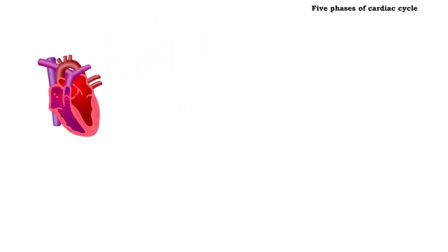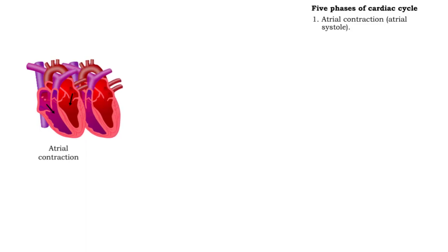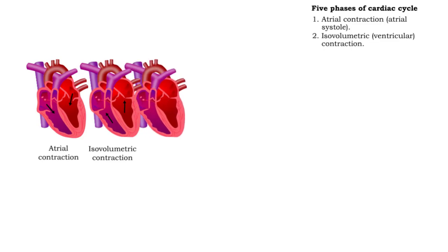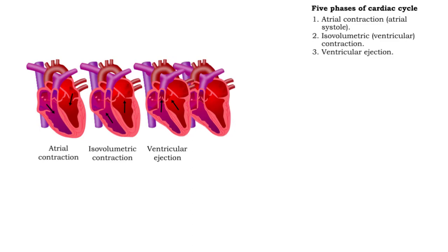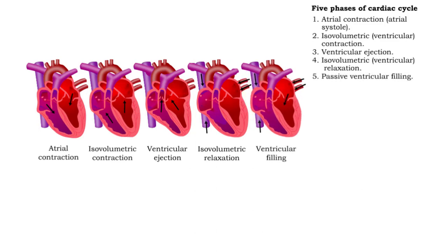Atrial contraction, or systole, initiates the cardiac cycle. Phases that follow are isovolumetric contraction, ventricular ejection, isovolumetric relaxation, and ventricular filling.